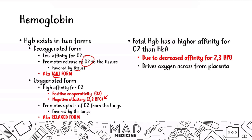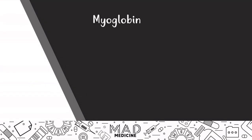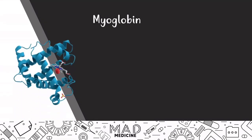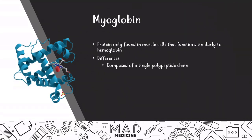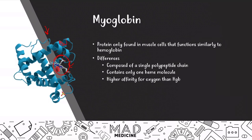Another molecule closely related to hemoglobin is myoglobin. This protein is only found in muscle cells but functions very similarly to hemoglobin. The difference is that it's composed of a single polypeptide chain, unlike hemoglobin which has four chains in two pairs. It contains only one heme molecule — as you can see in the molecular structure, there is one alpha helix and one heme group attached to it. Myoglobin has a higher affinity for oxygen than hemoglobin.